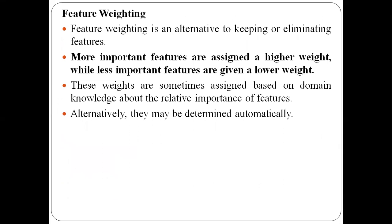We have one more technique for selecting a subset of features — that is feature weighting. Feature weighting is an alternative technique for choosing a subset of features. In feature weighting, we assign weights to features. Features with higher weights are chosen as important features, and features with lower weights are left out.